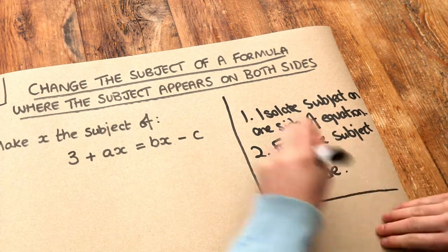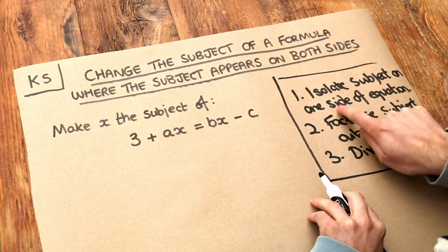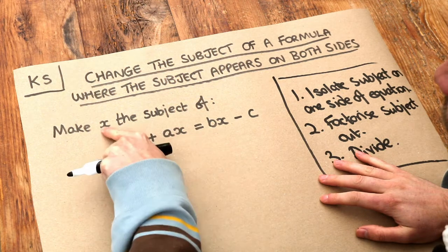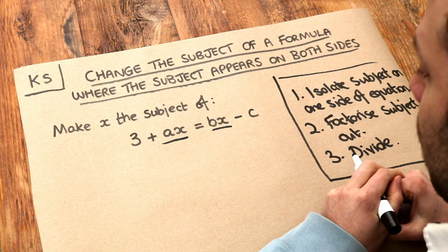So that's the strategy we need to use for this question. Now firstly, we want to isolate the subject on one side of the equation. The subject terms here involve the x. So we've got the ax here and the bx. We want to get all the x terms on one side of the equation.